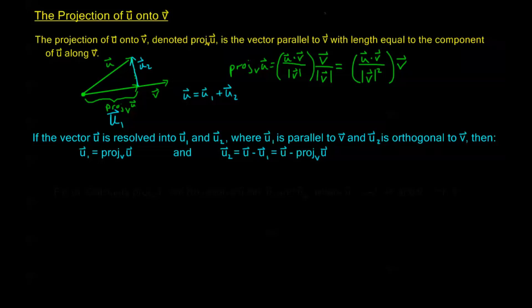Let's see an example. Calculate the projection of u onto v and resolve u into u₁ and u₂, given that u is ⟨-2, 4⟩ and v is ⟨1, 1⟩.